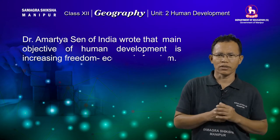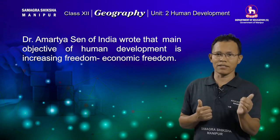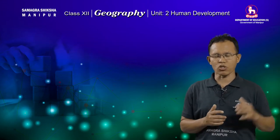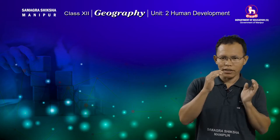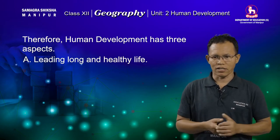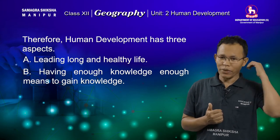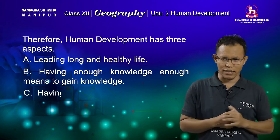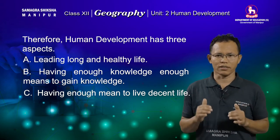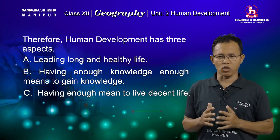According to Dr. Amartya Sen of India, human development refers to increasing freedom — here we mean economic freedom. From the diverse opinions of these two renowned economists, we can conclude the main aspects of human development: first, living a long and healthy life; second, having enough means to gain knowledge; and third, having enough means to live a decent living. This is the main concept of human development postulated by the two economists of Asia.